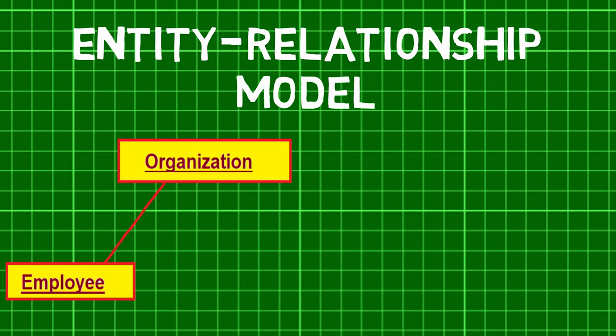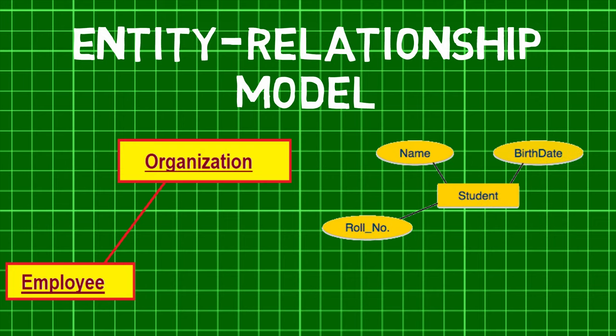An entity is a thing or object in the real world that is distinguishable from the surrounding environment. For example, each employee of an organization is a separate entity. Entities are represented by means of their properties, called attributes. All attributes have values. For example, a student entity may have name, class, and age as attributes.